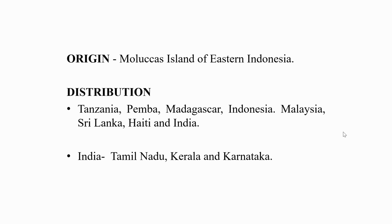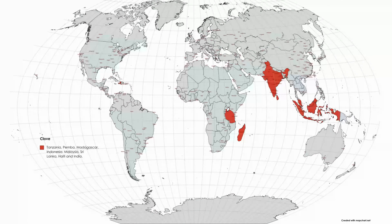Clove is indigenous to the Moluccas Islands of Eastern Indonesia. It was later introduced to Mauritius and established in the islands of Zanzibar and Pemba. The important clove-producing countries in the world are Tanzania, Pemba, Madagascar, and Indonesia. It is also grown in Malaysia, Sri Lanka, Haiti, and India.